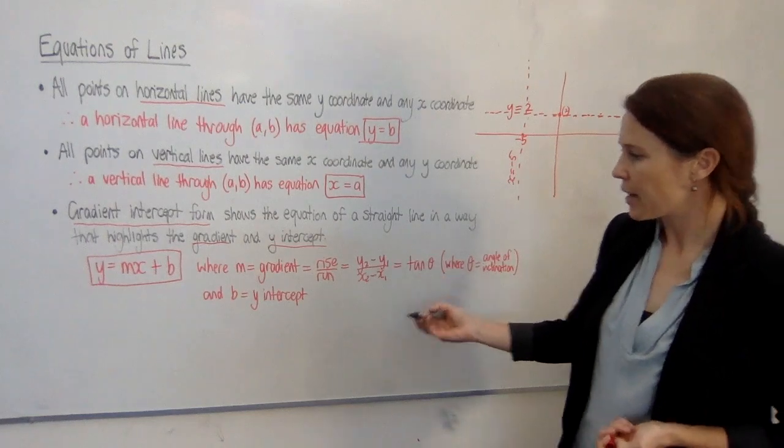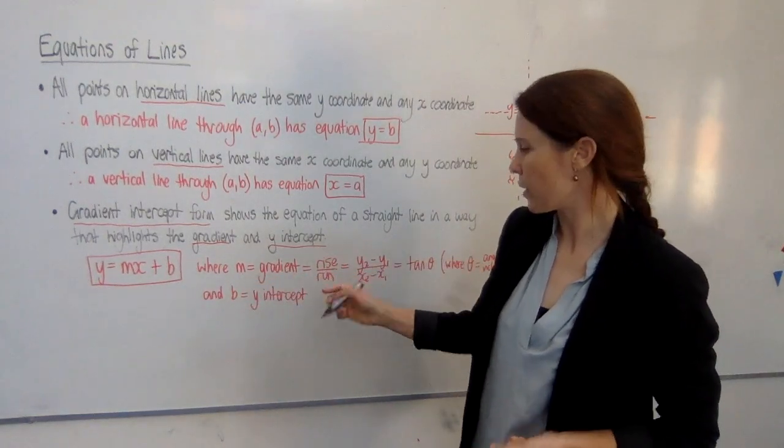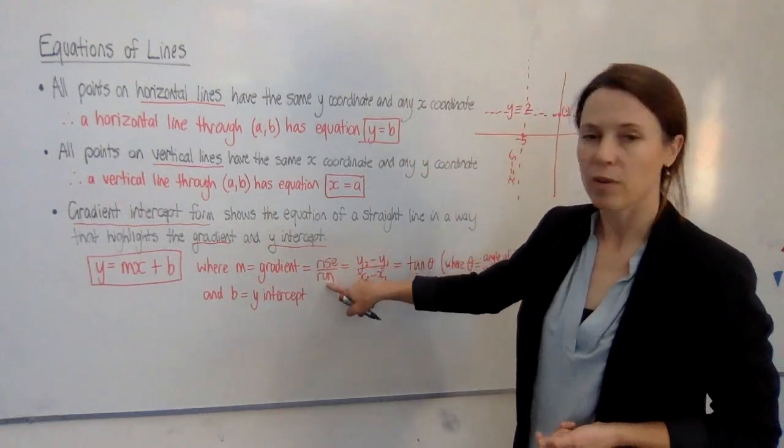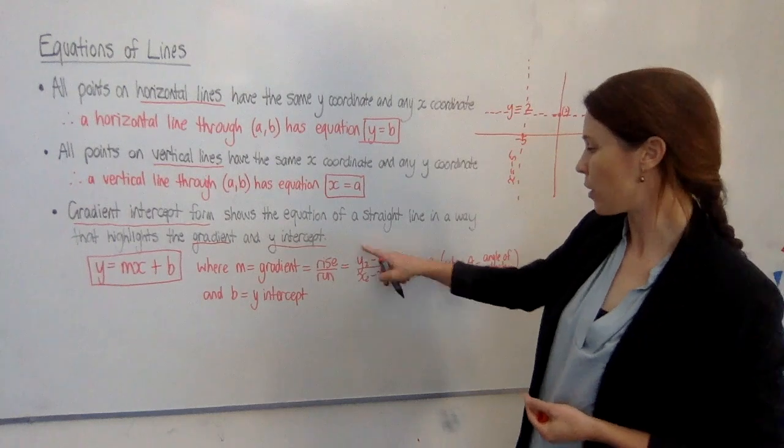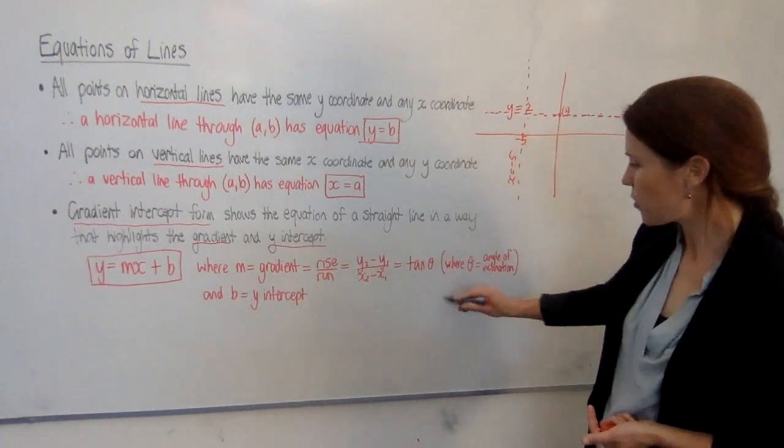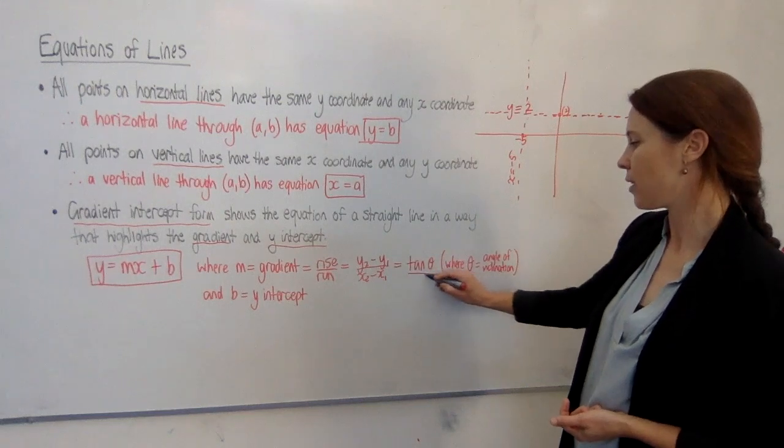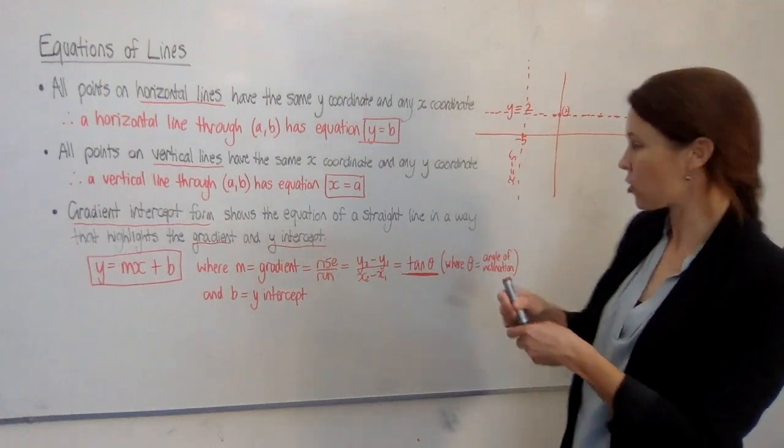The things that we'd like to add in here, we've said here that m is the gradient. We know that. Let's look at what else it is. It's the rise over run of the line. We also have a formula for gradient, y2 minus y1 over x2 minus x1. And we've also recently learned that the gradient of the line is also equal to tan of theta, where theta is the angle of inclination.